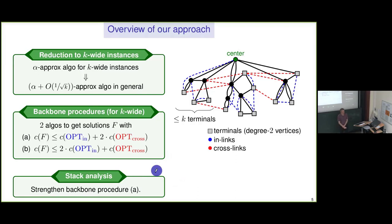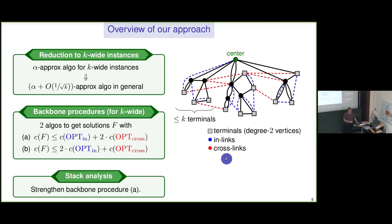There was a question about whether the backbone procedure is also with respect to the LP for K-wide trees — yes, you can do it with respect to the LP. It's based on equivalence of optimization and separation. One can build up an LP with the required constraints, but to separate the LP, you use the equivalence between optimization and separation — so it's not the natural LP. Even for TAP, the natural LP has an integrality gap of at least 1.5. So we actually beat that here, doing something beyond the natural LP.